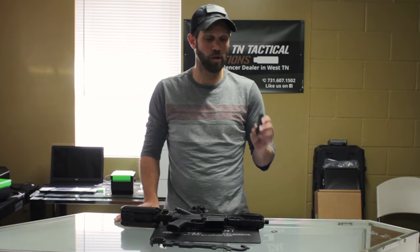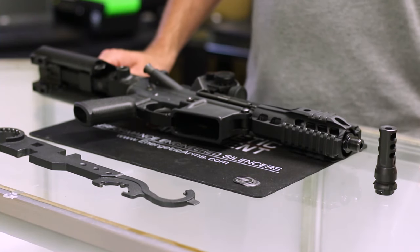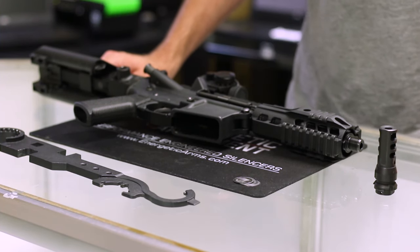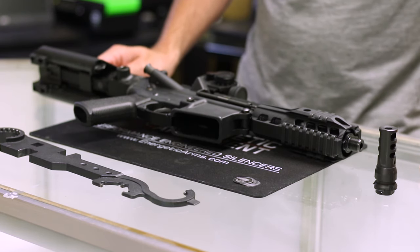Today we're going to be showing you how to install a Dead Air muzzle brake onto your rifle using timing shims. This way you can mount any of the Dead Air Sandman line of suppressors to your barrel. You can purchase these through our website at eSilencers.com.